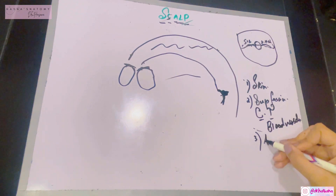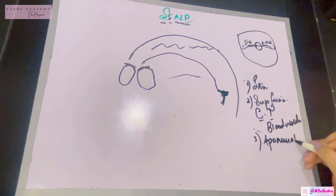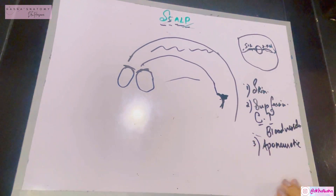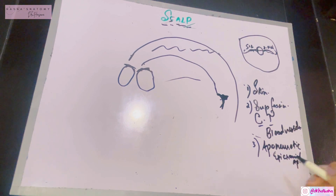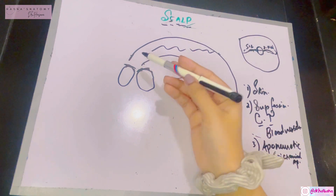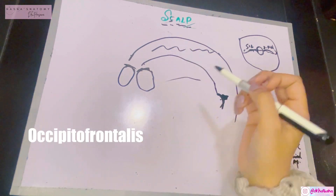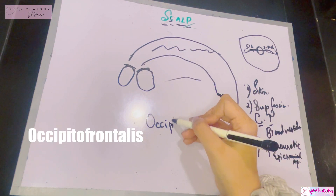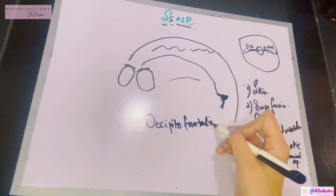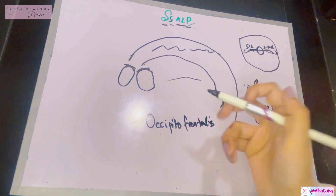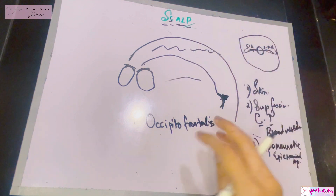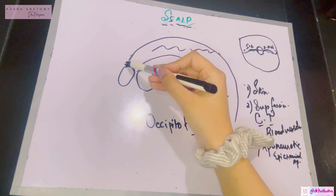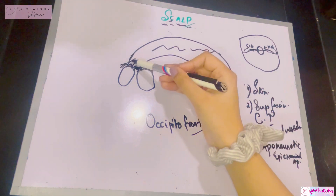The third layer — A — is the Aponeurotic layer. This is where the epicranial aponeurosis lies, between the two muscle bellies of the occipitofrontalis muscle. The occipitofrontalis muscle has two parts: an occipital and a frontal part, and between them the epicranial aponeurosis bridges the entire area, joining the two muscles like a tendon.